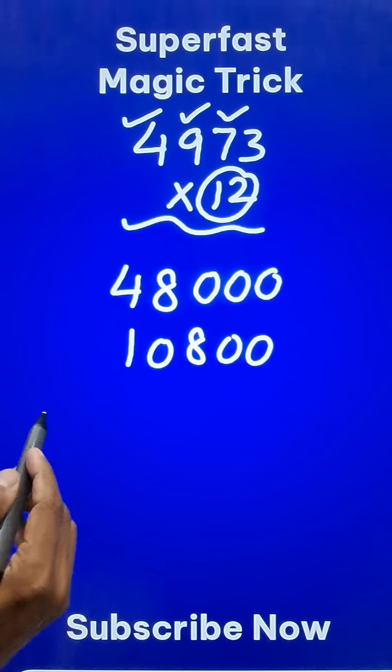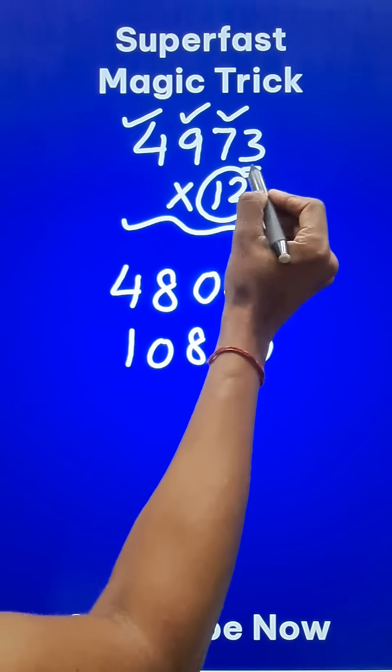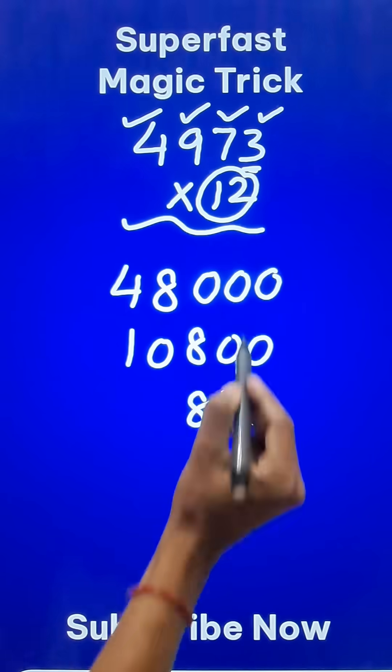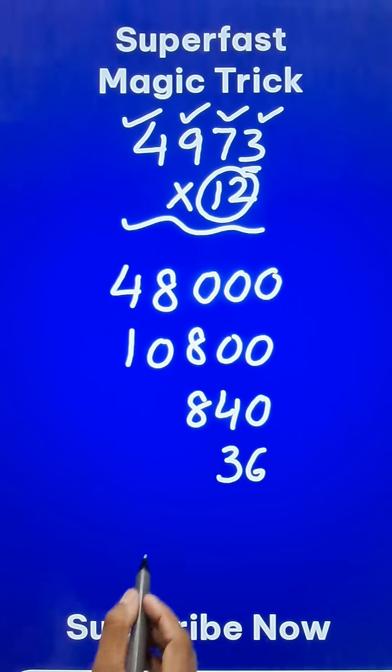Then 12 times 7 is 84 and 84 followed by 1 zero. So I have to write it here. 84 followed by 1 zero and then 12 times 3 is 36 which is obviously to be written here.